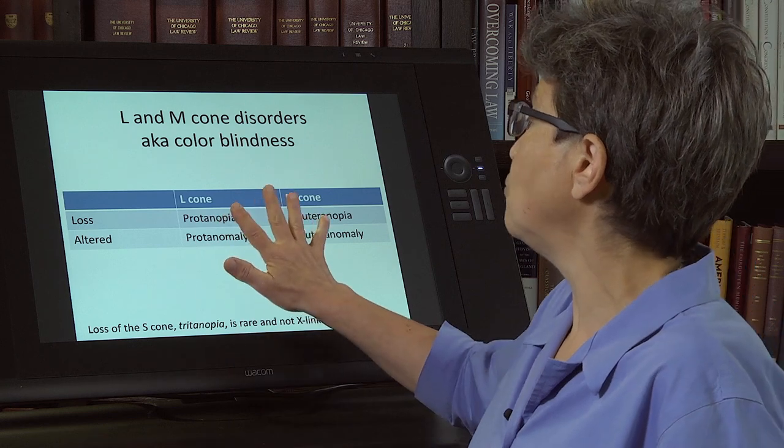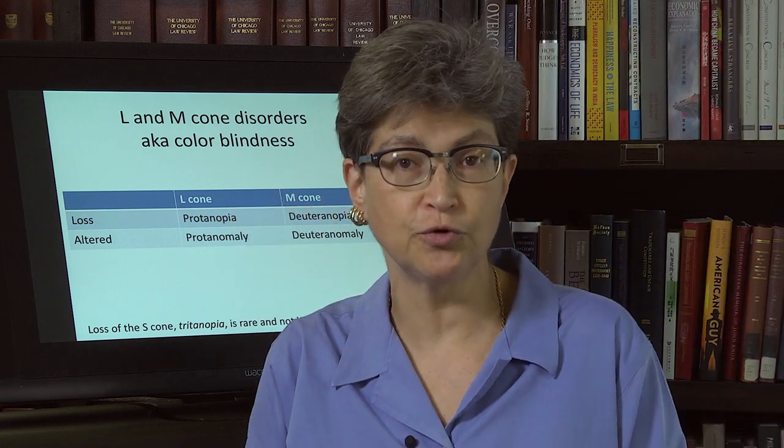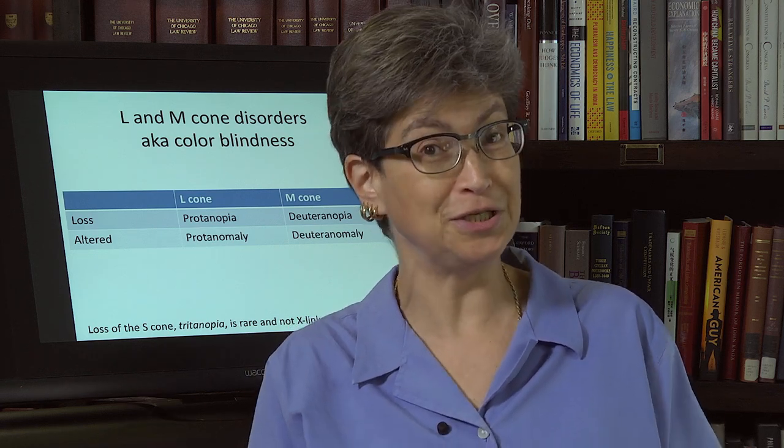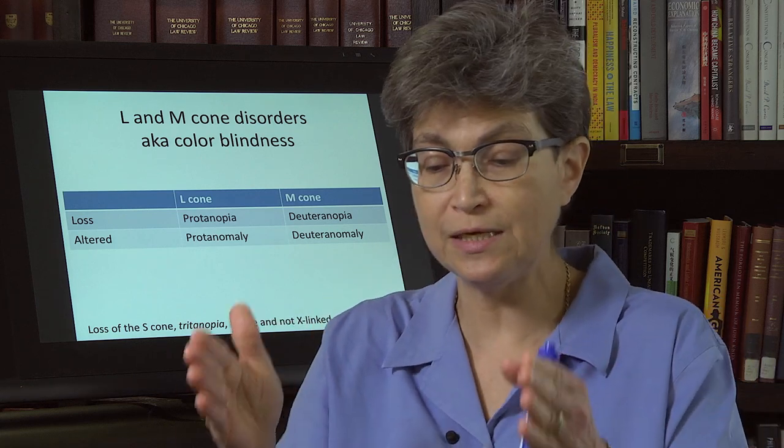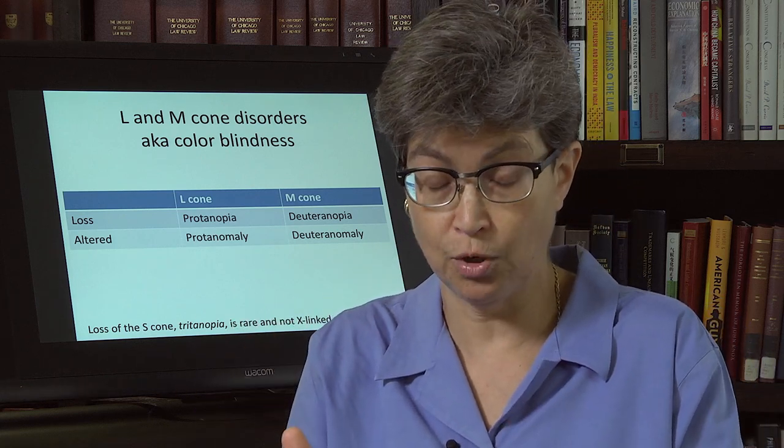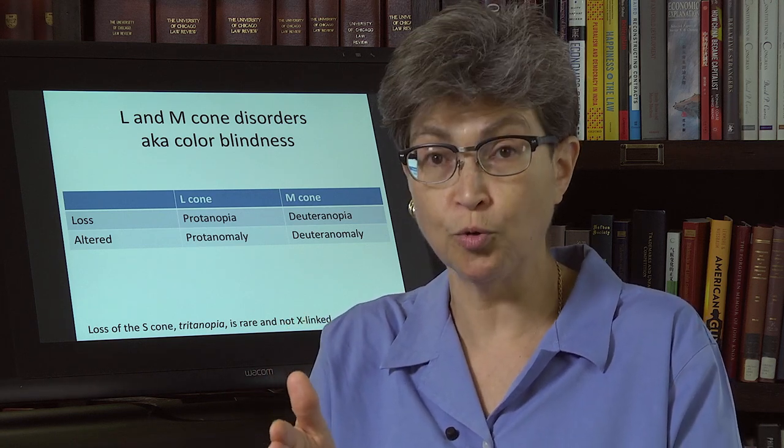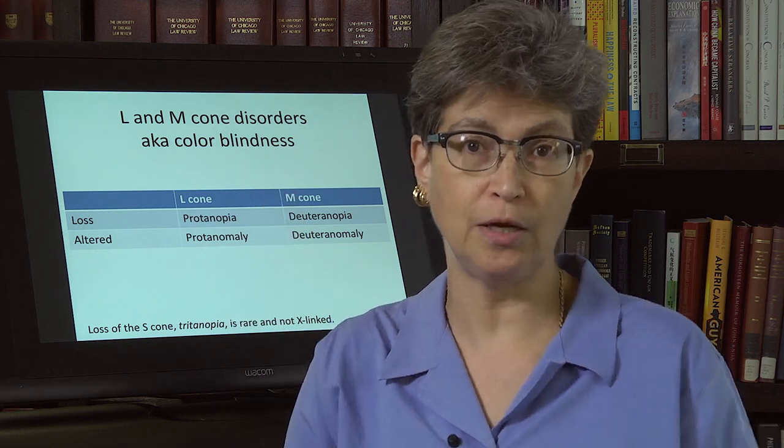All right, so what is the upshot of having any one of these versions of colorblindness, so-called colorblindness? It's not that you can't see color, it's just that you cannot see this one distinction or you see that distinction much less well. So much more poorly, so you're not seeing the difference between red and green.